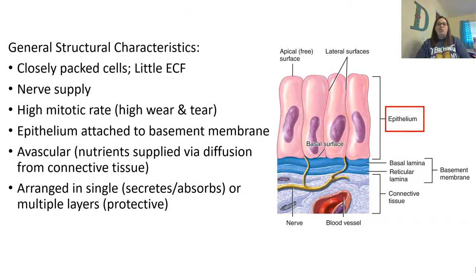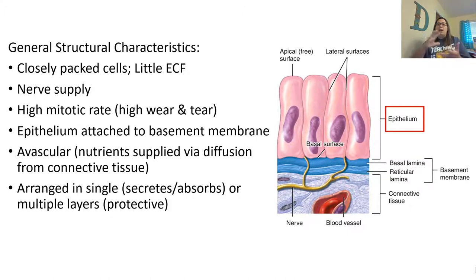General characteristics of epithelial tissue: cells are closely packed together with only a little extracellular fluid between them. They do have a nerve supply and a high mitotic rate because they're in areas of lots of wear and tear — cells get stretched and sloughed off. Because of this, they need the ability to do mitosis. The epithelium is also attached to the basement membrane, is avascular, and nutrients are supplied through diffusion from connective tissue.